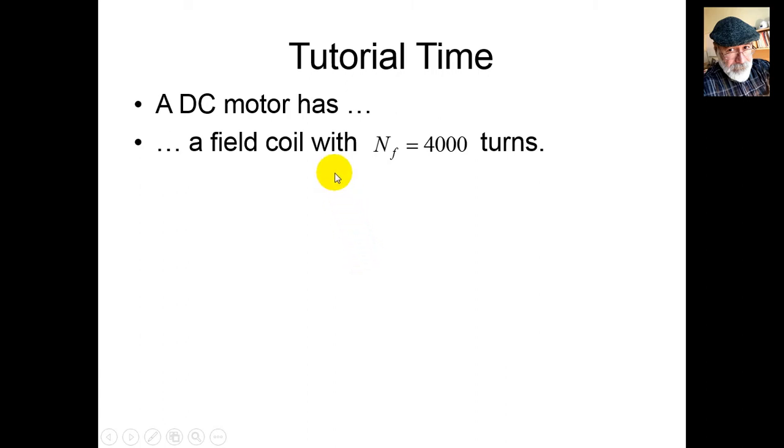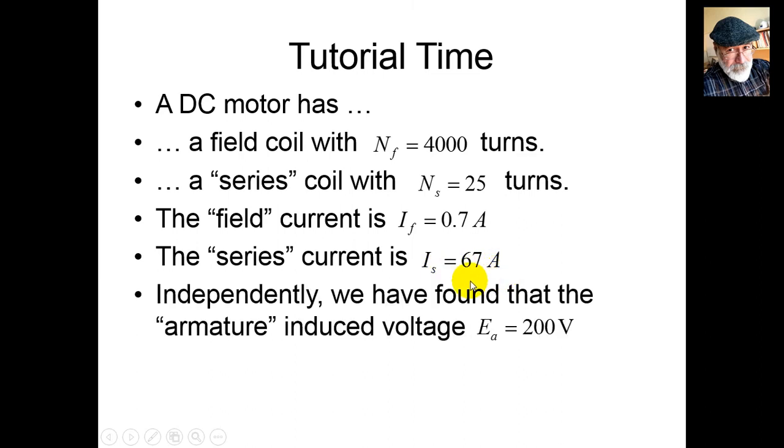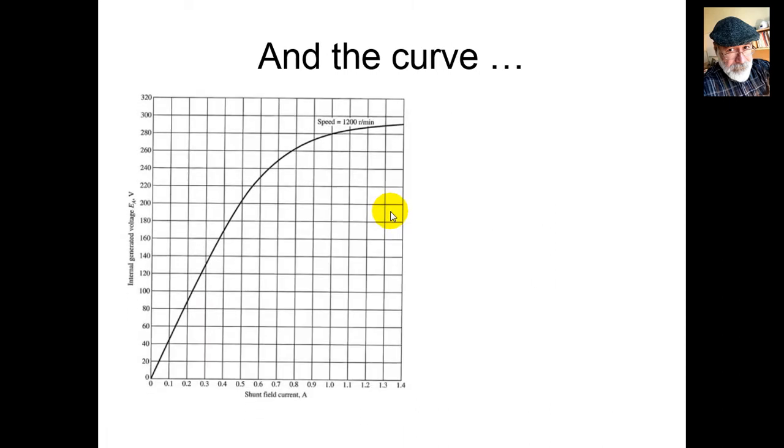Let's show how this works in a tutorial. A DC motor has a field coil with 4000 turns per pole and a series coil with 25 turns per pole. The field current IF is 0.7 amps, the series current IS is 67 amps. Independently, we've found the armature induced voltage Ea is 200 volts. What is the actual velocity of the motor?